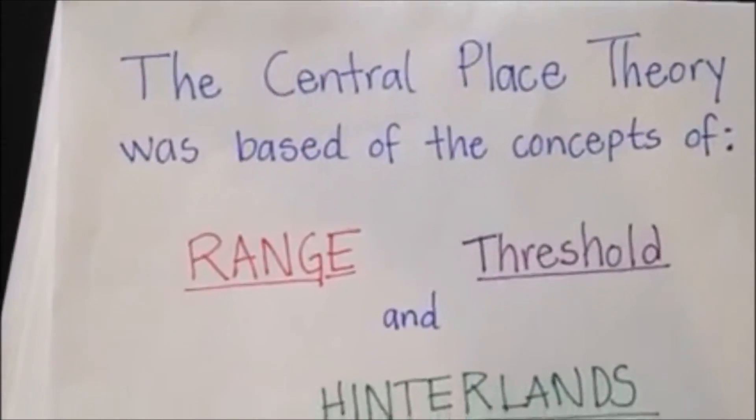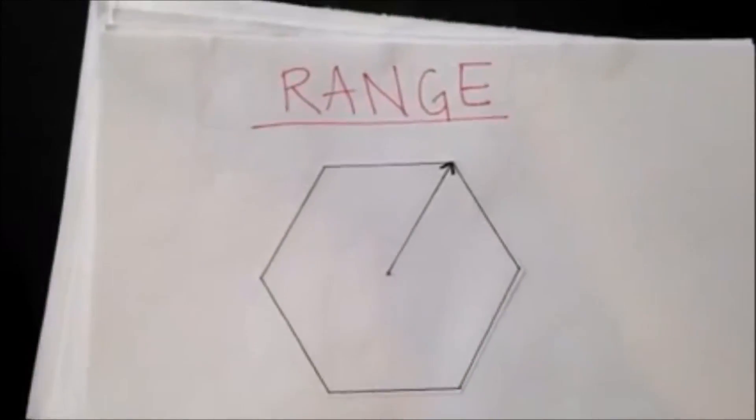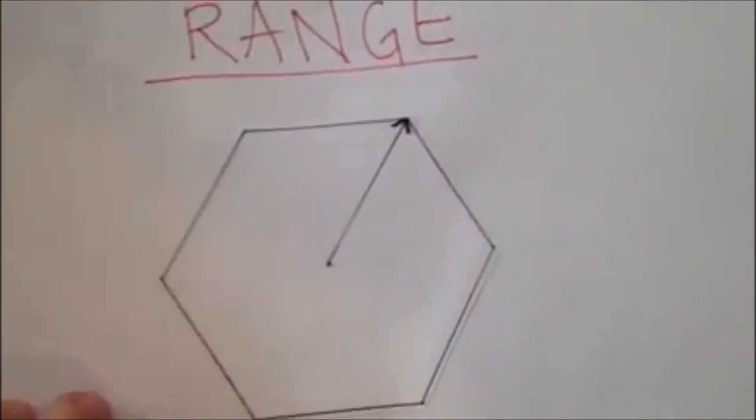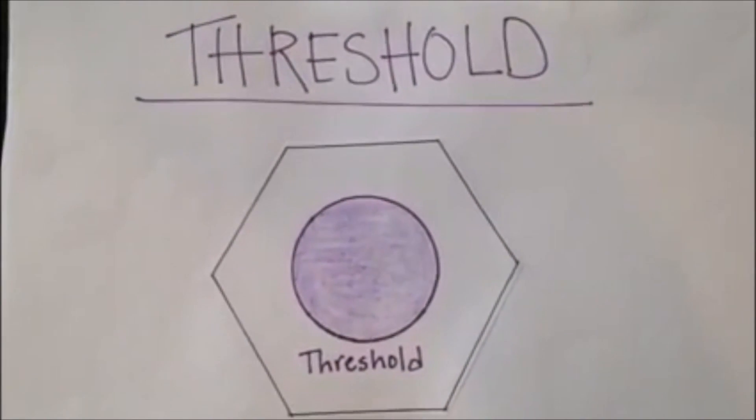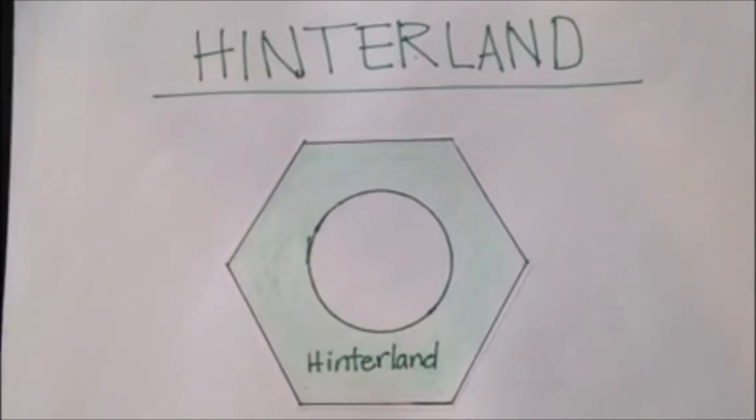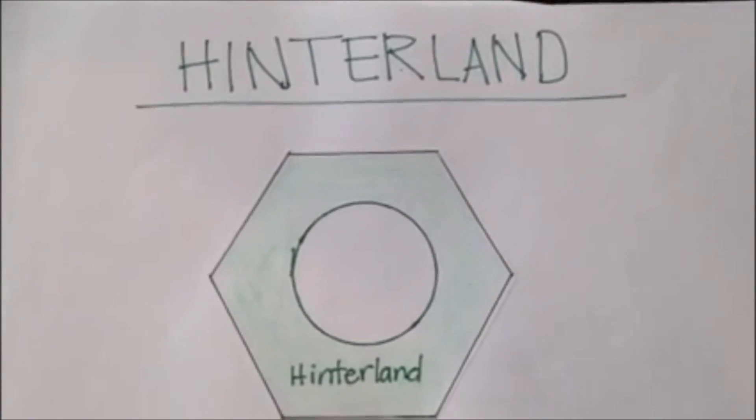The Central Place Theory is based off the concepts of range, threshold, and hinterland. Range is the maximum distance people are willing to travel to use a service. Threshold is the minimum number of people needed to support a service. Hinterland is the area surrounding the city that interacts with the market in regards to service.